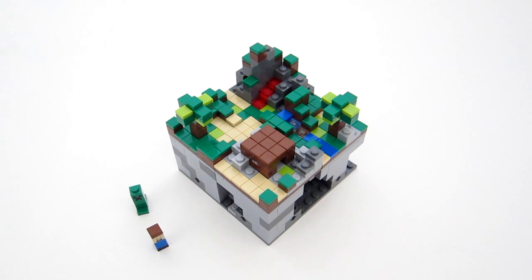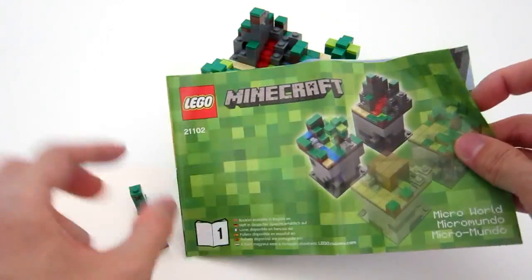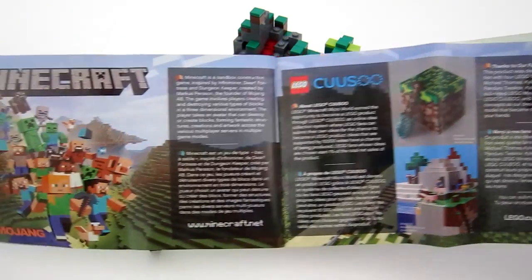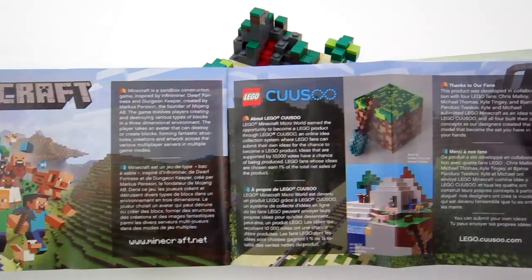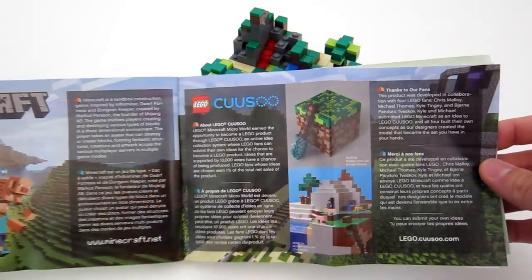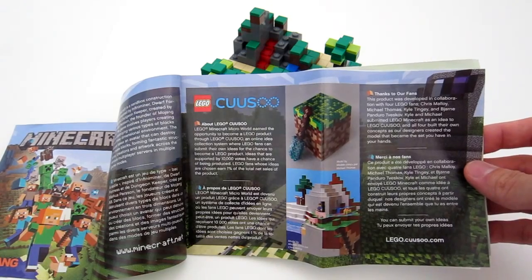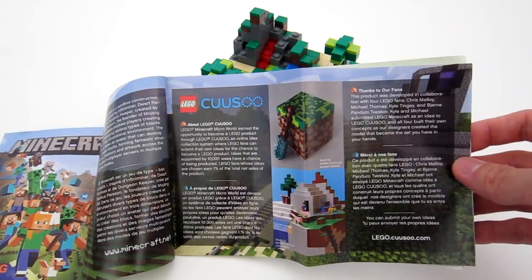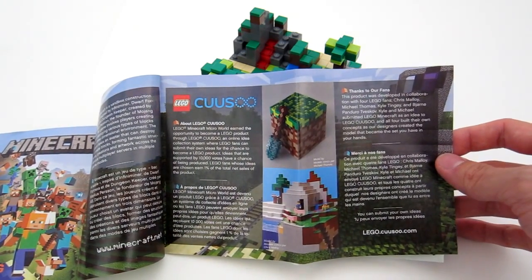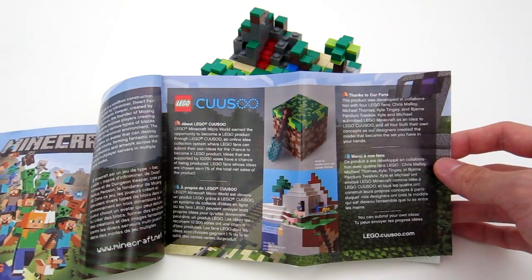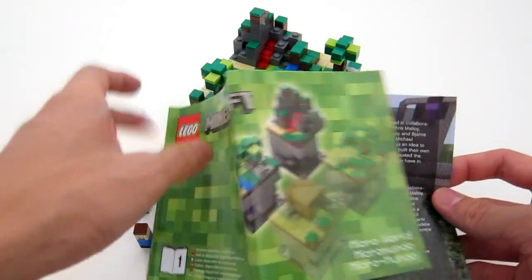While building this set, I do want to point out a few things. So starting with the instruction manual on the first page, it has a little description about Minecraft and Lego Cuusoo, and it kind of gives a shout out to the builders who designed this, well not designed it, but submitted their ideas and the concept art. And you can see two of the images printed on the first page. So that's a pretty nice feature that they included.